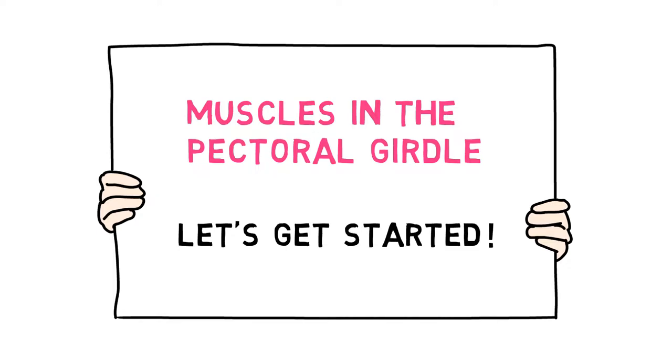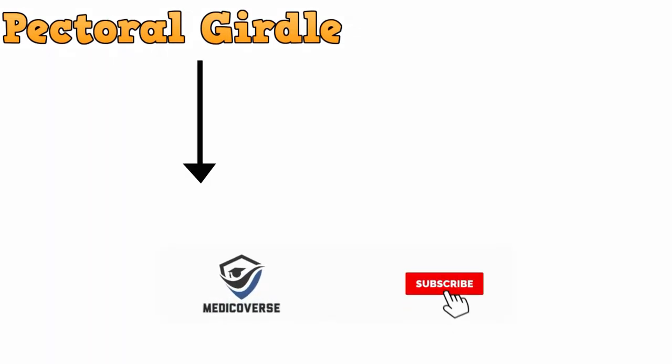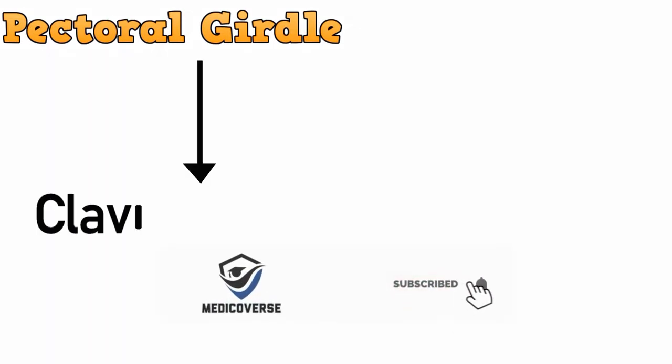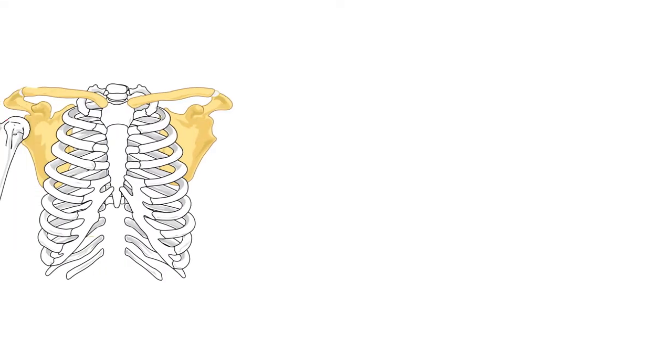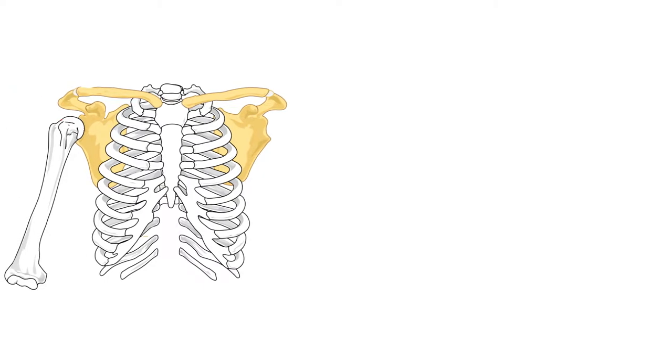The pectoral girdle, or the shoulder, consists of the clavicles and the scapulae. This is the pectoral girdle, composed of the clavicles and the scapulae.